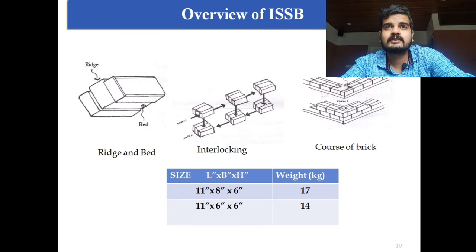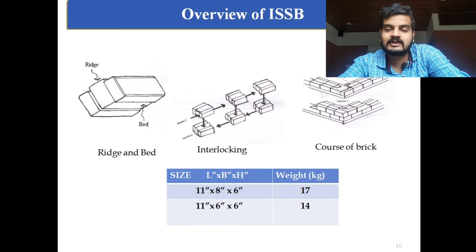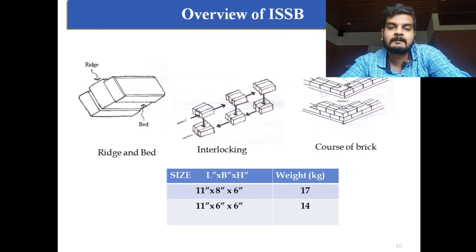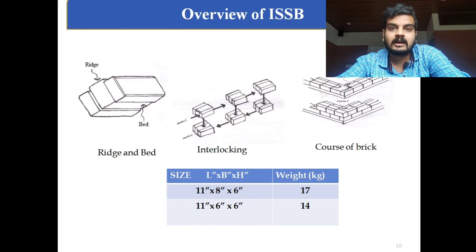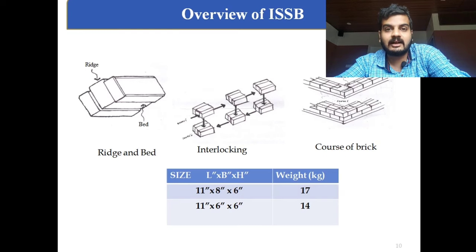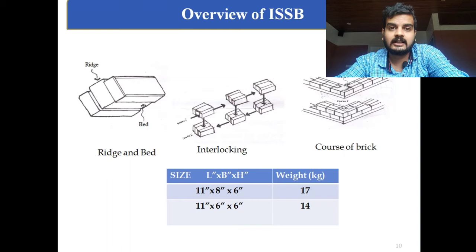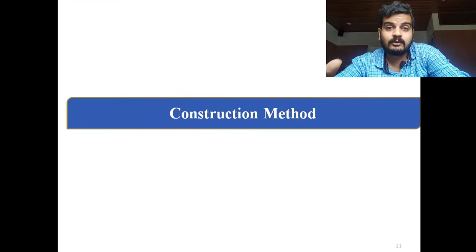Here you can see an overview of the interlocking stabilized soil brick. The left side picture shows the ridge and bed used for the interlocking system. The middle picture shows how the interlocking system works — grooves are provided on all four sides of the brick. The right side shows courses of dry-stacked bricks without mortar. Two common brick sizes are produced: 11×8×6 inches at 17 kg, and 11×6×6 inches at 14 kg. The weight is very less — only one-third to half that of laterite stone or cement blocks.